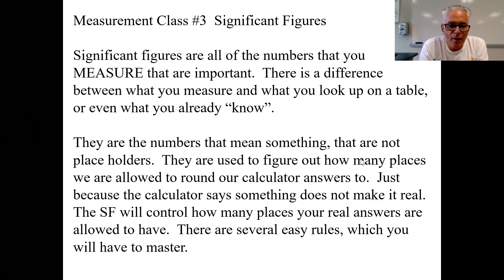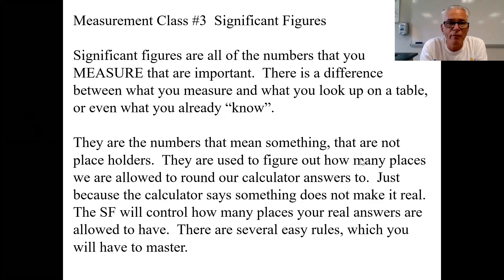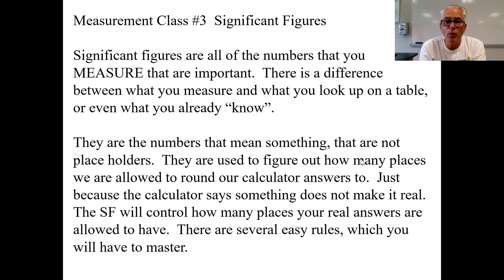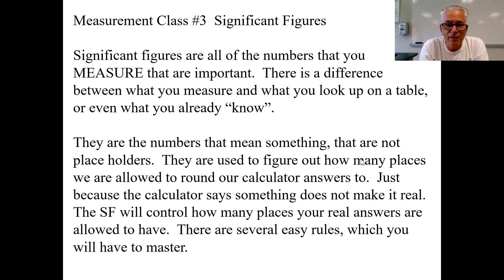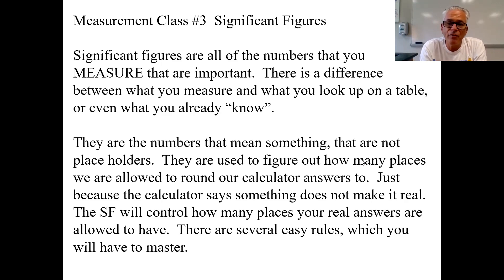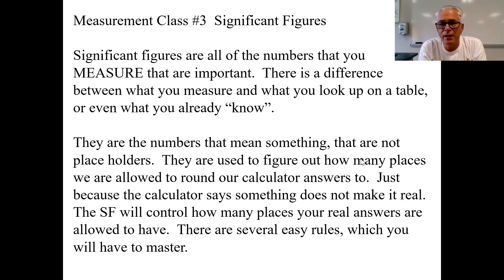When we measure things in chemistry, it's important to know that some measurements are more accurate than others — they have more decimal places. There are going to be rules around how many digits we're allowed to have. When we use measurements in calculations like density, where density equals mass over volume, your answer has to reflect that same level of exactness. Just because your calculator shows 11 decimal places doesn't mean that's the correct answer.